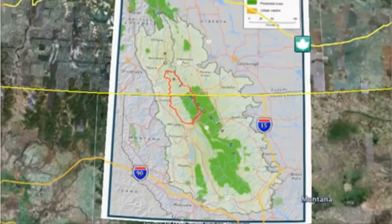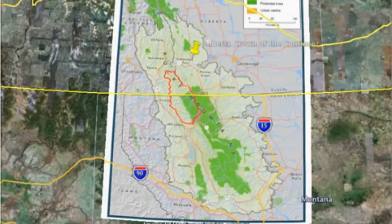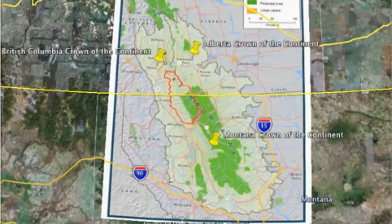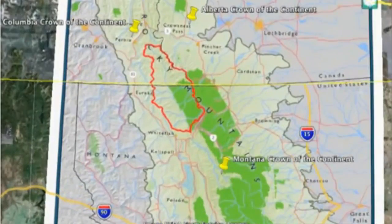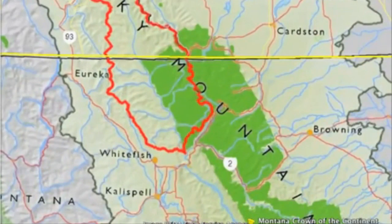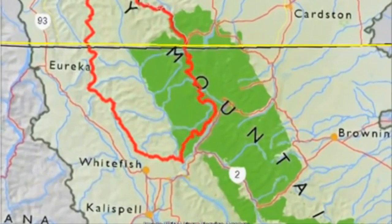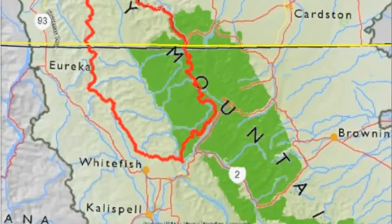What makes the Crown of the Continent so unique are the stories that are told and heard in the Alberta portion of the crown, the British Columbia portion of the crown, as well as the Montana portion of the crown. What really makes it a very unique ecosystem is the fact that Waterton Glacier International Peace Park forms the core of this ecosystem — it's the world's first peace park, drawing international attention and visitors from across the world.